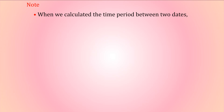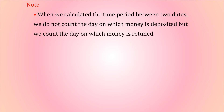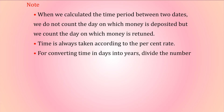Note: when we calculate the time period between two dates, we do not count the day on which money is deposited, but we count the day on which money is returned. Time is always taken according to the percentage rate. For converting time in days into years, divide the number of days by 365.